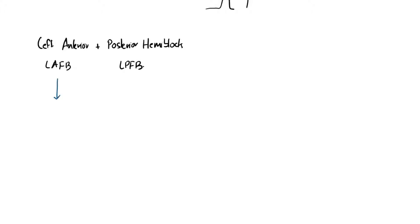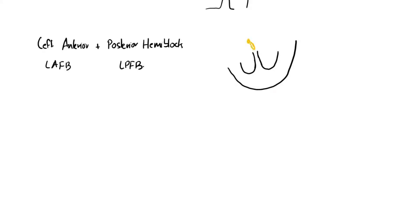We're going to start off by drawing the heart. We'll draw the AV node, the bundle of His, the left anterior fascicle, and the left posterior fascicle. You can see that the left anterior fascicle is depolarizing the left side and the posterior fascicle the right side. We're going to label these as the anterior fascicle, the posterior fascicle, and the right bundle branch.